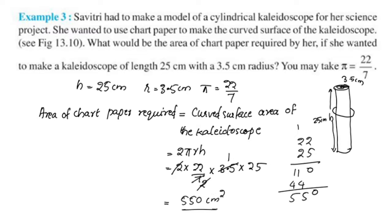The kaleidoscope curved surface area is 550 centimeter square.